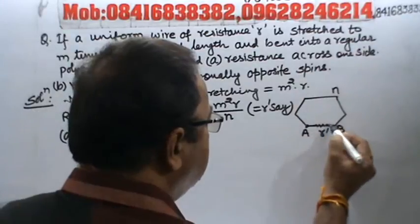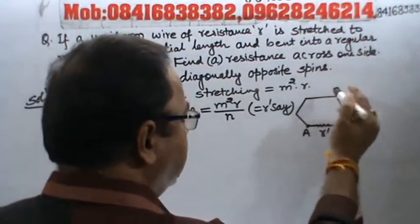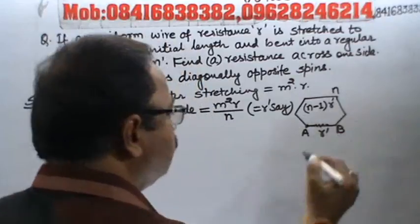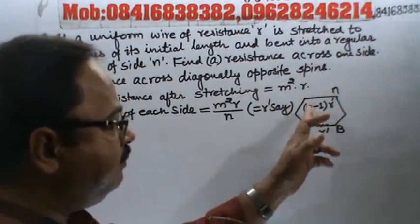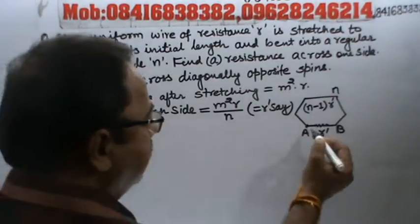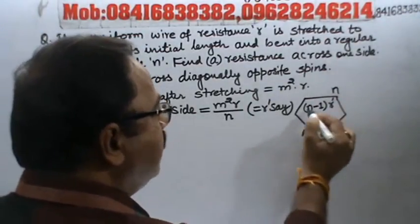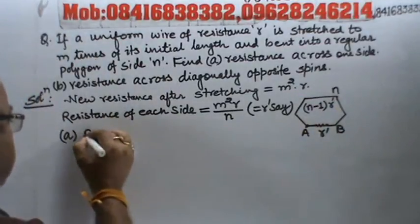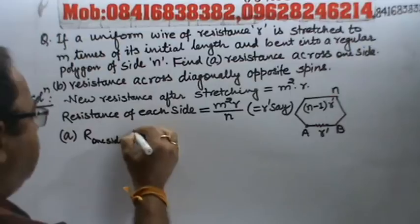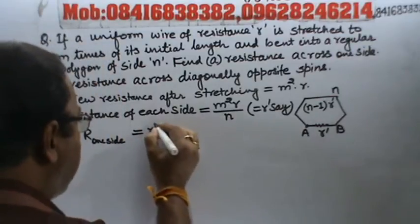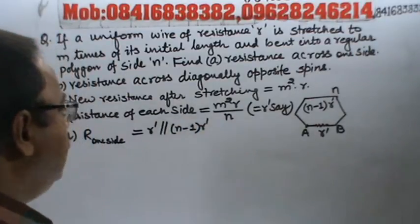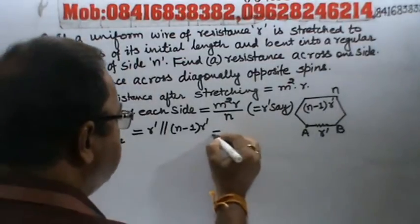So, remaining resistance will be (n-1) times r dash. Since total N side ka polygon hai. Right? And if r dash is here, then remaining is n-1. This is in parallel. So, this r dash is parallel to (n-1) times r dash. That is, r across one side, resistance across one side. This is equal to r dash parallel to (n-1) times r dash. And, in parallel, what happens? Product by sum.